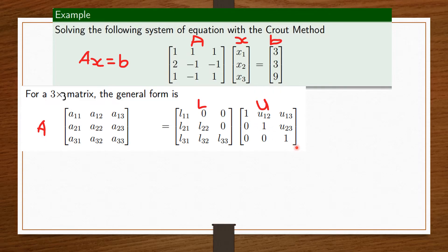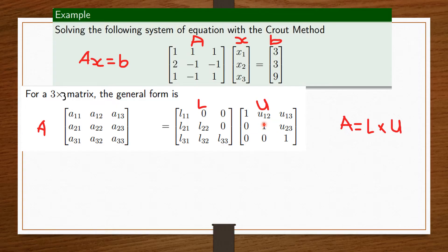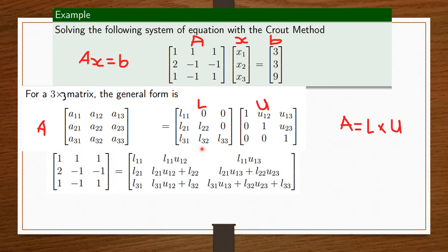That's the major difference between the Doolittle and the Crout's method. The Doolittle has the ones running through its diagonal for L, but for the Crout's, it has the ones running through the diagonal for the U. So Doolittle is L and Crout's is U. Just as we did for the Doolittle method, we are going to multiply this L and this U matrix. L is a lower triangular matrix and U is an upper triangular matrix, and for the Crout's, the U has the ones running through its diagonal.